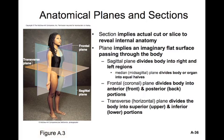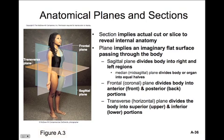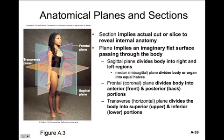Anatomical planes and sections: a section implies an actual cut or slice that reveals internal anatomy. We'll see many of these different sections as we explore the cadaver dissection in anatomy and physiology revealed. A plane implies an imaginary flat surface that passes through the body. The sagittal plane divides the body into left and right regions. The median or mid-sagittal plane divides the body or an organ into equal halves. A frontal or coronal plane divides the body into front and back halves — anterior or posterior portions. The transverse or horizontal plane divides the body into upper and lower portions.